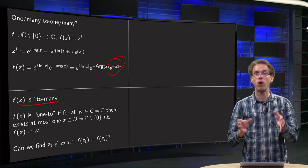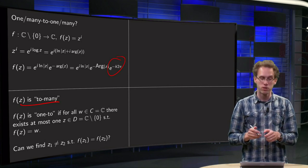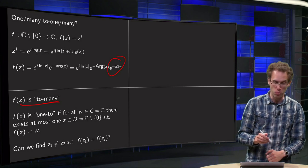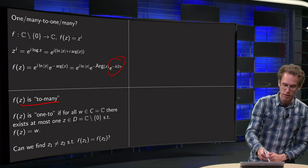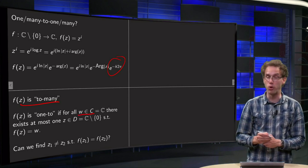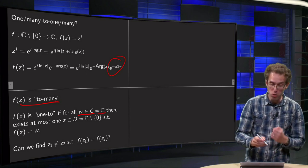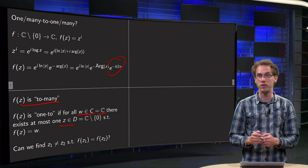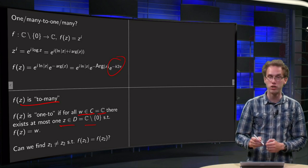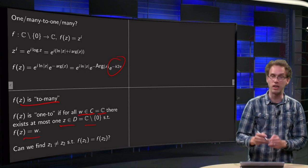Now is f one-to-many or many-to-many? So f(z) is one-to... For all w in your codomain, which is in this case C, there exists at most one z in your domain, which is C without zero, such that f(z) equals w. That's the definition.